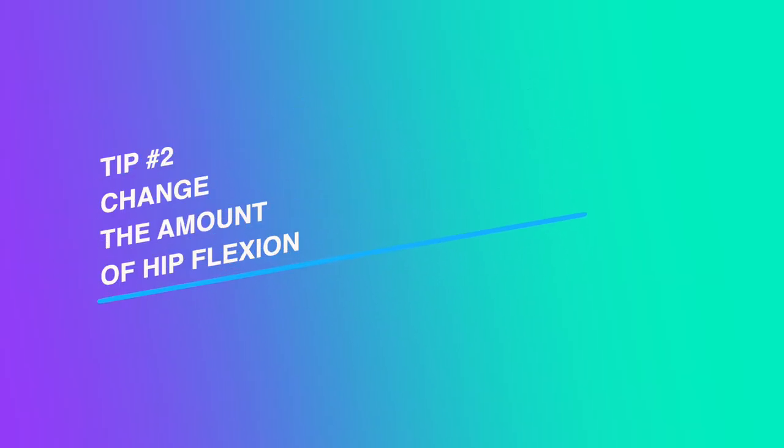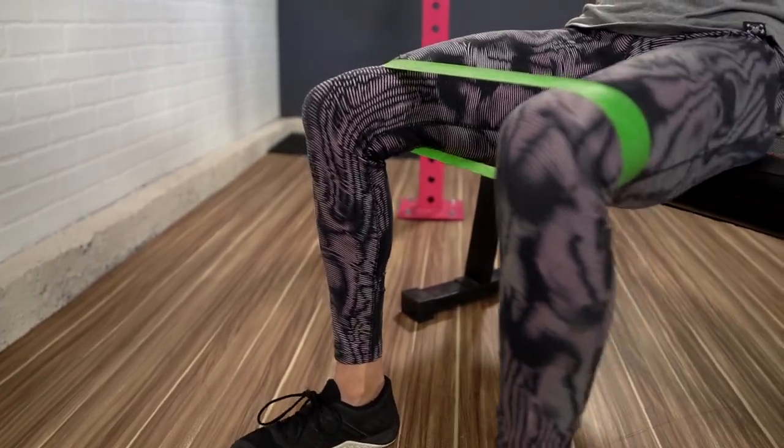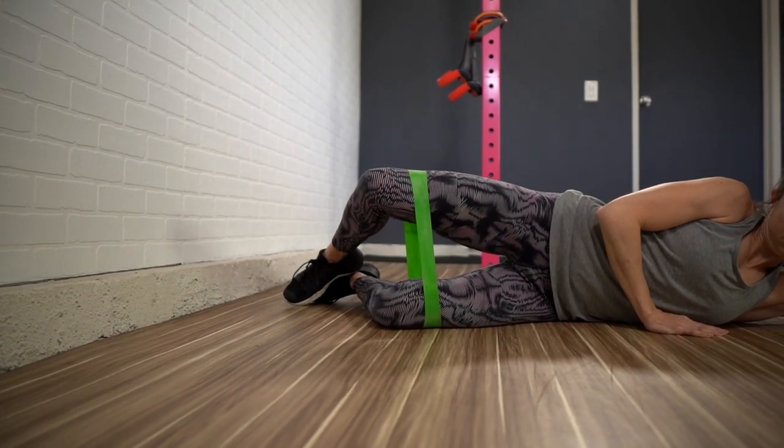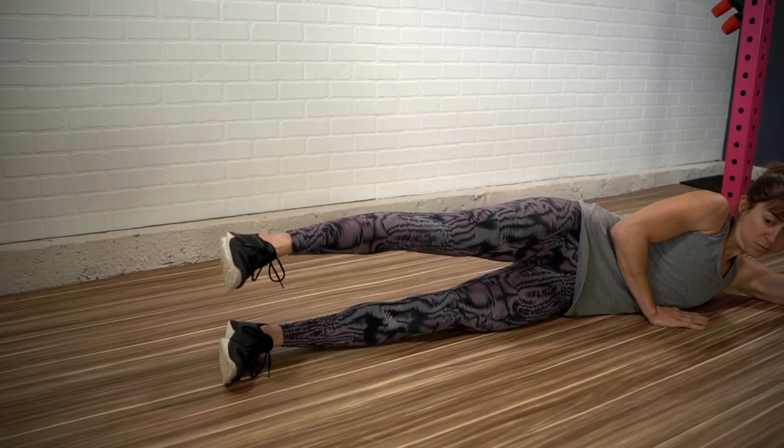Tip number two is to change the amount of hip flexion you're performing the movement in. You can do lateral raises or abduction movements seated, lying down, or standing — all of which change the amount of hip flexion involved. If you struggle with the basic clam shell, you can change the amount of bending or extension in your hips to better engage the glute medius. While that lying clam shell might seem like a basic move, we often allow our TFL or even our piriformis to take over. Try changing the exact degree of hip flexion — you might even do a straight side-lying movement instead. Using hip extension can help shut off the hip flexor muscle.